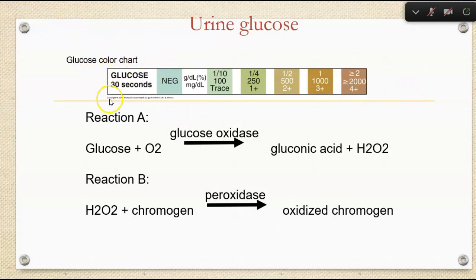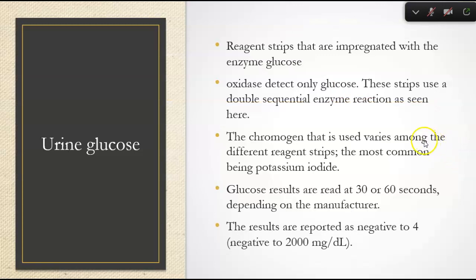We read glucose first at 30 seconds; negative is just that blue reagent pad. These reagent strips detect only glucose using a double sequential enzyme reaction — glucose oxidase and peroxidase. The chromogen used varies, but potassium iodide is the most common. Results are reported as negative, or up to 4 plus, or negative to 2,000 milligrams per deciliter, depending on how the lab reports it.